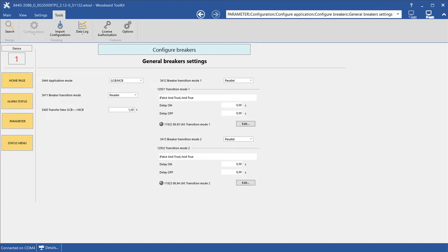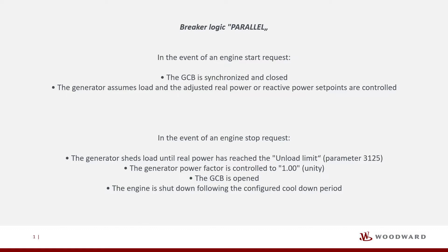Let's see how the breaker modes are working. Breaker logic parallel: in the event of an engine start request, the GCB is synchronized and closed. The generator assumes load and the adjusted real power or reactive power points are controlled. In the event of an engine stop request, the generator sheds load until real power has reached the unload limit, parameter 3125. The generator power factor is controlled to 1.00 unity. The GCB is opened.